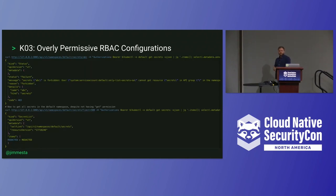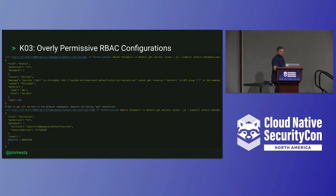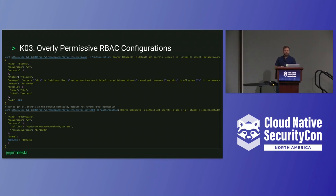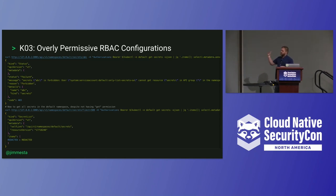We had an awesome contribution last week that goes unnoticed and isn't talked about much. Basically, giving the 'list' verb access via RBAC can expose secrets. This is not a bypass — it's built-in Kubernetes functionality. It works with the 'list' verb and the 'watch' verb, where you get an 'items' line and actually print out secrets, where that really wasn't the intention of the particular RBAC policy. There's a full write-up in the top 10 of how this works.